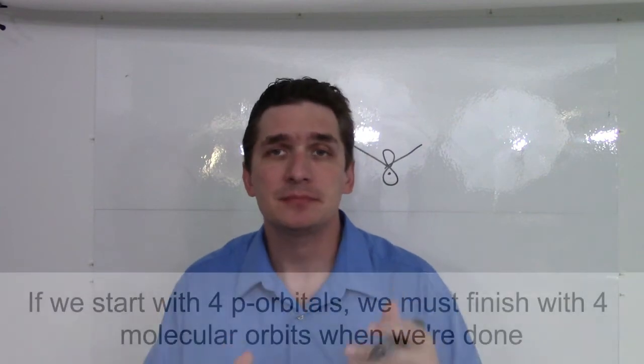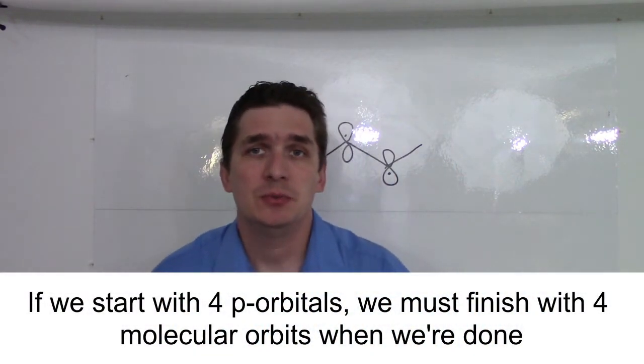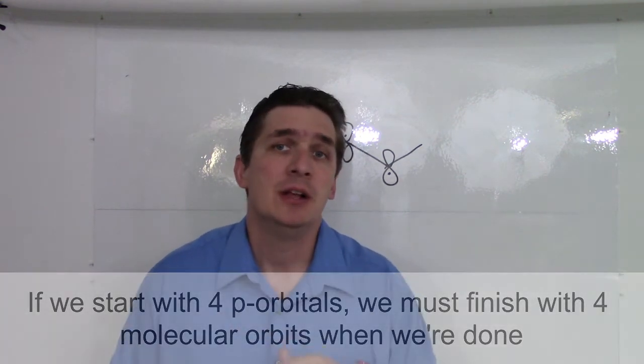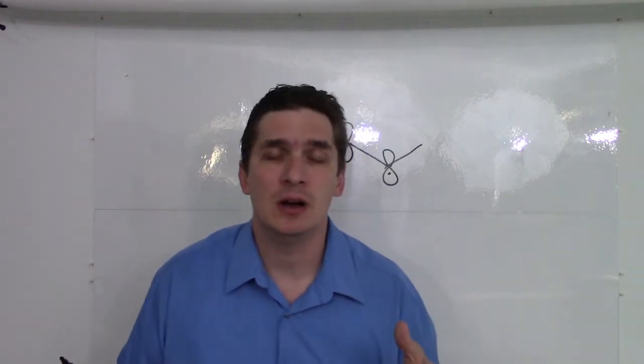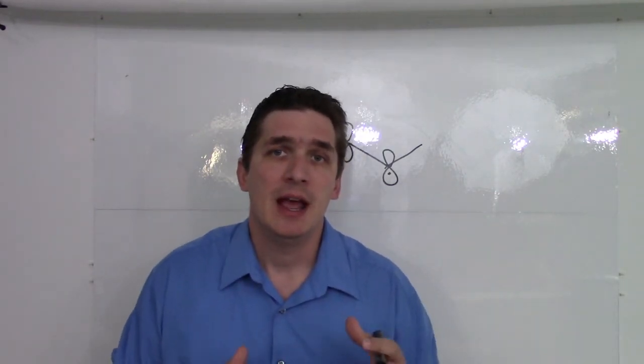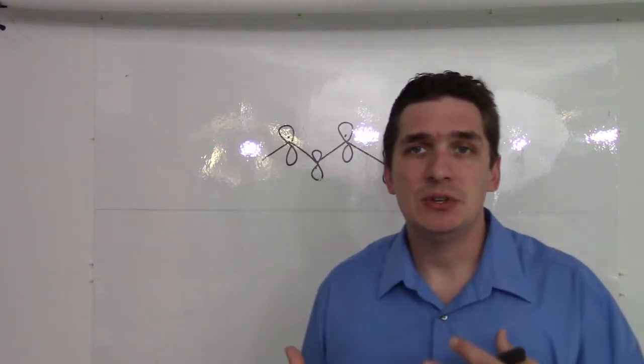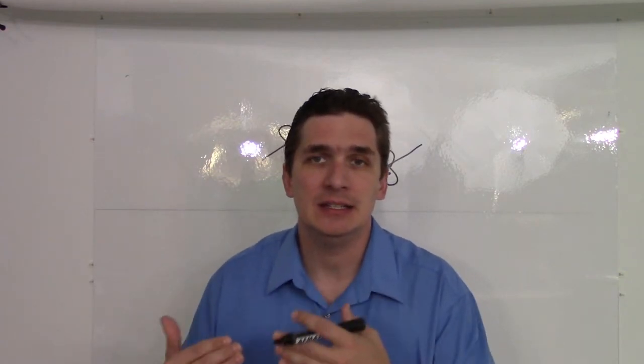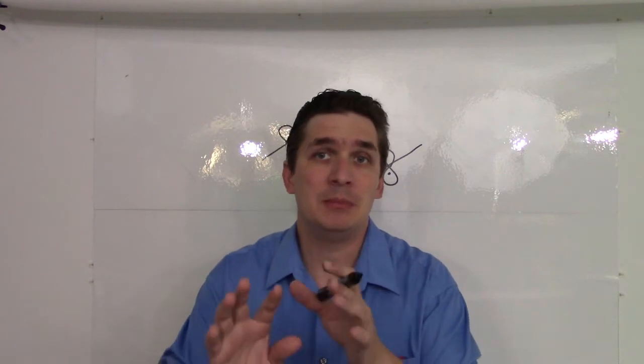How do we do it? Well, we actually kind of use this SPDF progression. So, there's one s orbital, so there's one s-type molecular orbital. There are three p orbitals, so there are up to three p-looking molecular orbitals, and 5d, so forth. Symmetry is what's going to set the number of actual s-like, p-like, d-like, and f-like orbitals. Now, I know I'm throwing a lot at you right now. I'm laying a framework, trust me.